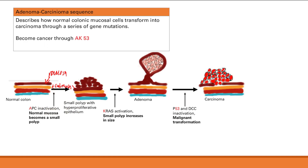The mnemonic to remember this sequence is AK53: APC loss creates a small polyp, KRAS activation turns it into an adenoma, and loss of p53 and DCC causes cancer. Remember, there are many guardian steps that must occur, and this entire process takes around 10 years for a polyp to become a carcinoma.